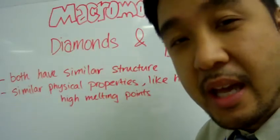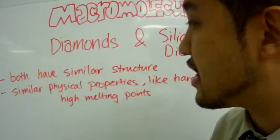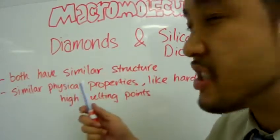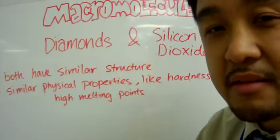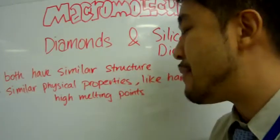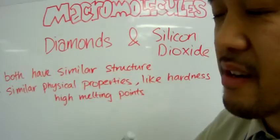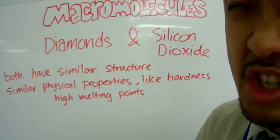Now, diamonds and silicon dioxide, they're kind of the same. They both have very similar structure, and because of that, they have similar physical properties, like having high melting points and being really hard when you make them into the right shape.